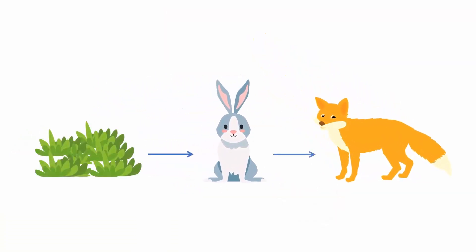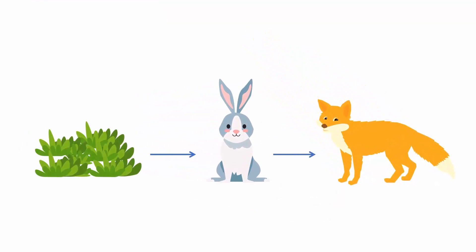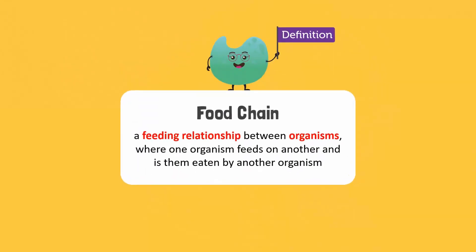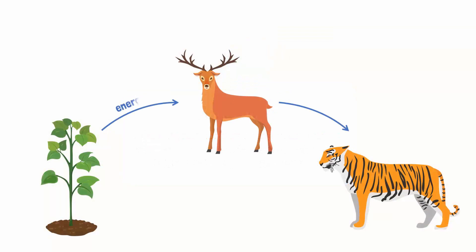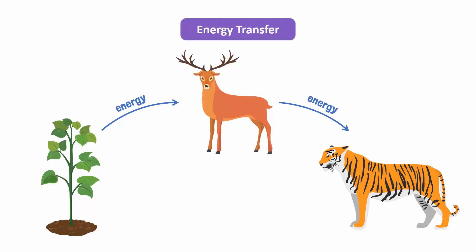If we put these relationships together, we end up with a chain like this. This feeding relationship between organisms in which one organism eats another and is then eaten by another organism is called a food chain. In a food chain, energy in one organism is transferred to the next organism. Therefore, a food chain also shows the route of energy transfer between organisms.